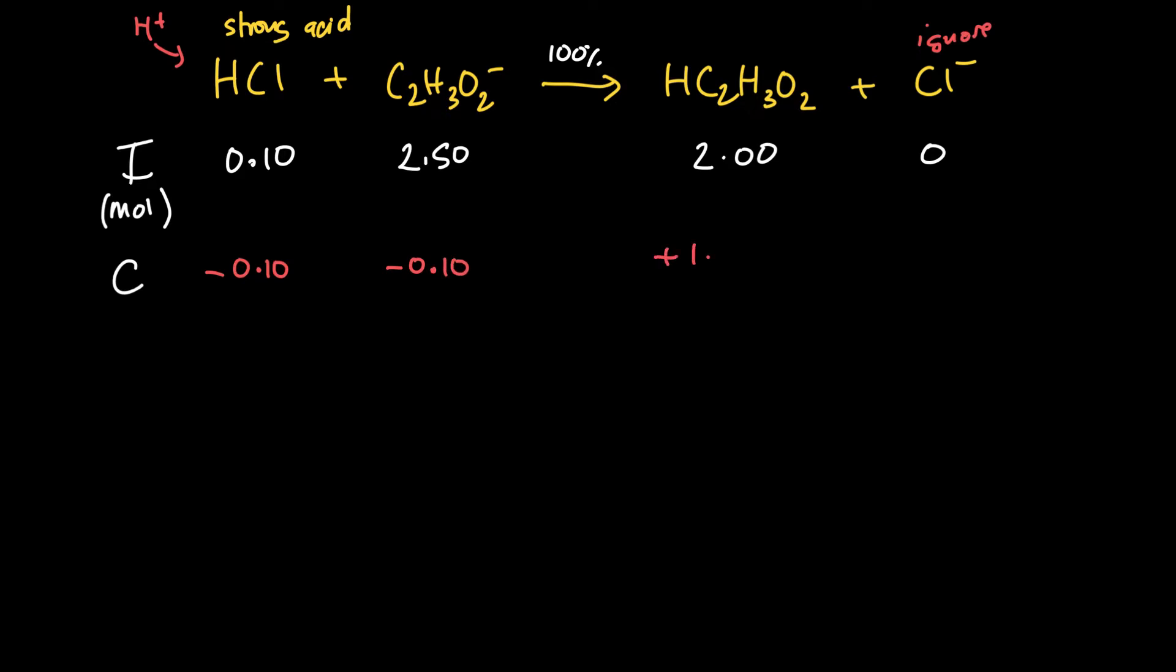And then because it's 1 to 1 to 1 to 1, we're going to go up by 0.1 and up by 0.1 moles here. So the final, so final instead of equilibrium, is going to be initial plus the change. So we've completely wiped out our HCl. We've reduced our acetate to 2.4 moles. And we've increased our acetic acid to 2.1 moles. And our chloride, right, we don't really care about chloride. We can ignore this whole column here. Because this is a neutral ion, it's going to have absolutely no effect at all upon the concentration.